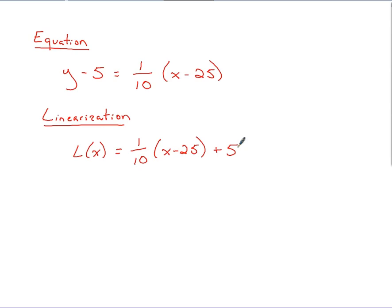When we were asked to establish the linearization function, that was our end point. But now we're asked to use this function to approximate the square root of 24.8. So at this point, we draw a little conclusion. Using this function, knowing we're plugging in 24.8 to start, we'll plug in 24.8 to this function. When we do that, we've got 1 tenth times 24.8 minus 25. All of that plus 5.